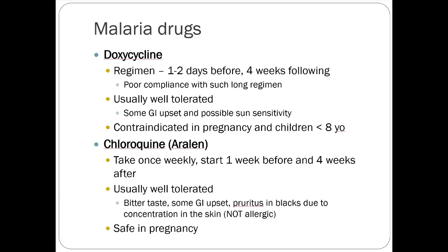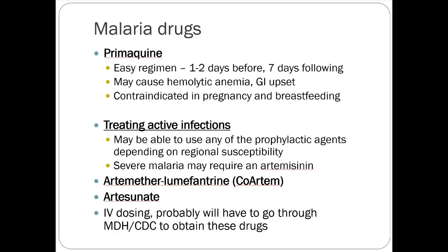Chloroquine is once weekly — start one week before, four weeks after. Once weekly plus a long regimen equals poor compliance. It's well tolerated but older and less robust with more worldwide resistance. It is safe in pregnancy and cheap, so it remains commonly used. Primaquine is one to two days before with seven days following. It can rarely cause hemolytic anemia. GI upset is an issue and it's contraindicated in pregnancy and breastfeeding.